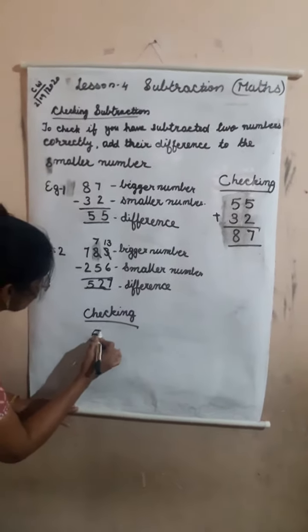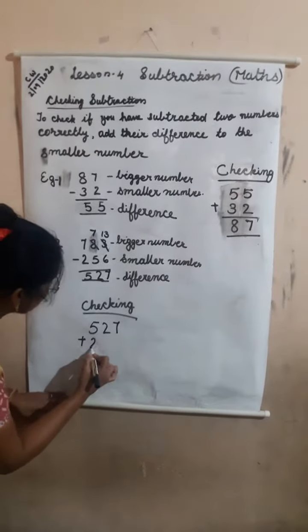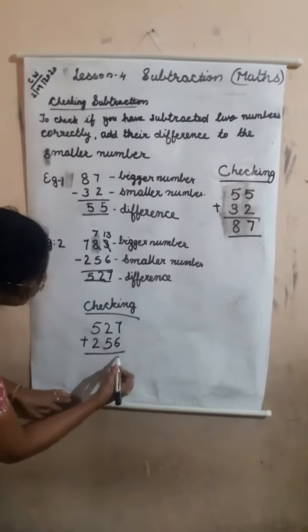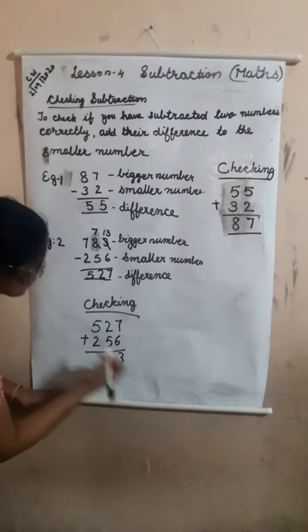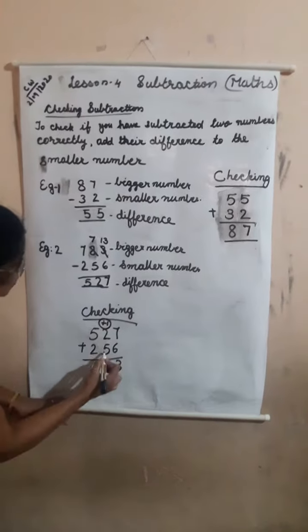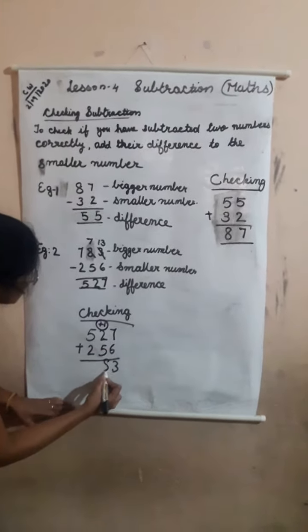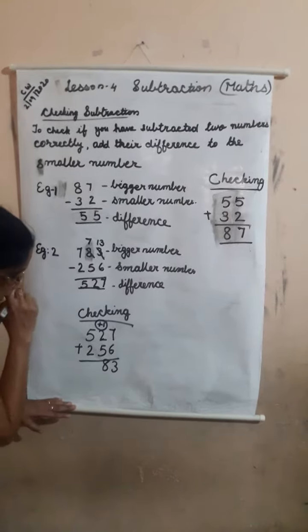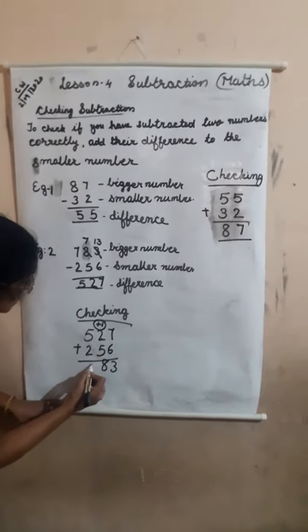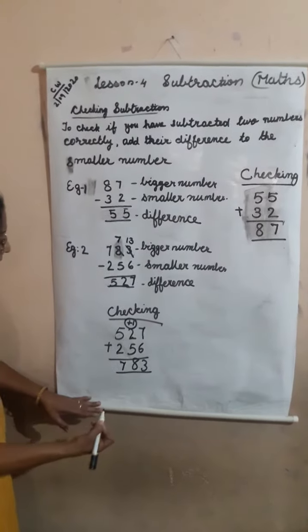Now let us do the checking: 527 plus 256. 7 plus 6 is equal to 13, write 3 here and carry 1 to the tens place. 2 plus 5 is equal to 7, plus 1 carry is equal to 8. Then the hundreds place: 5 plus 2 is equal to 7. We got the bigger number 783, so our answer is correct. Thank you.